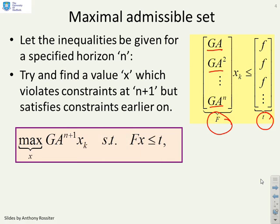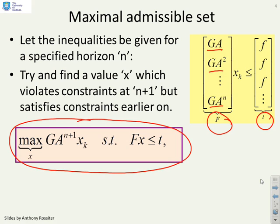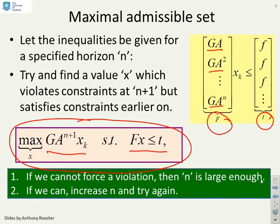We did a simple linear program: we tried to find the maximum over x of GA^(n+1) times xk, subject to Fx ≤ t. If we can force a violation, if we can make this GA^(n+1)xk bigger than f, then n is not big enough and we need to increase it. But if we cannot force a violation, then n is large enough. That was the definition of our maximal admissible set.